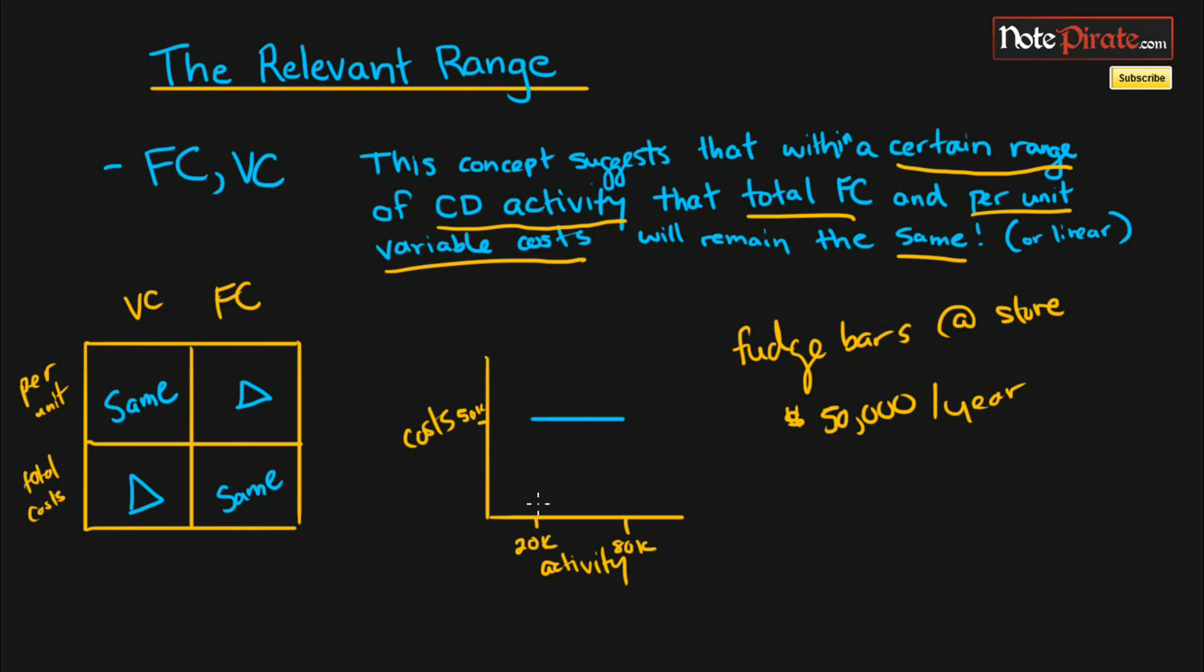If you were wondering what the k is, it's just $1,000 and that was our relevant range. It would only change if our cost driver activity goes outside of this range of 20,000 to 80,000 units. So if we sold less than 20,000 units we would probably not be able to break even and we would have to close up shop.